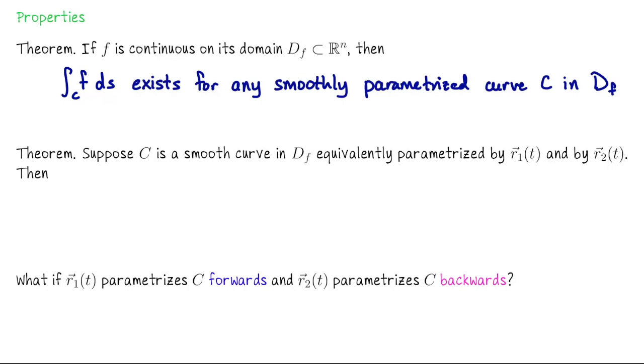Our next theorem is suppose I have a curve and I parametrize it one way and you parametrize it a different way. If r1 of t and r2 of t both parametrize the same curve C, we would compute the same value for the line integral of f over C. We would get the same thing whether we use the r1 description or the r2 description.